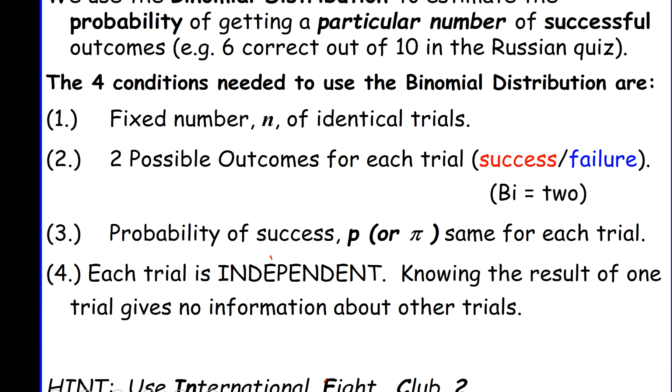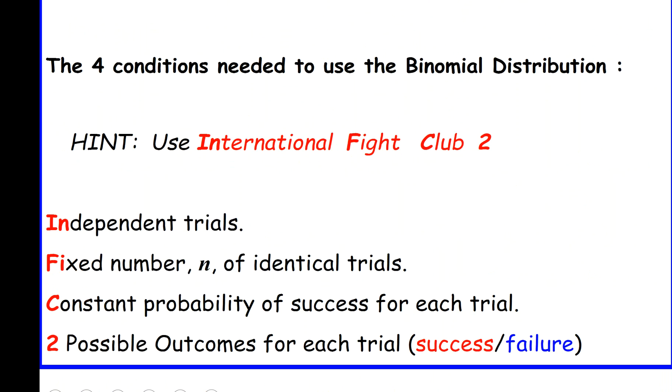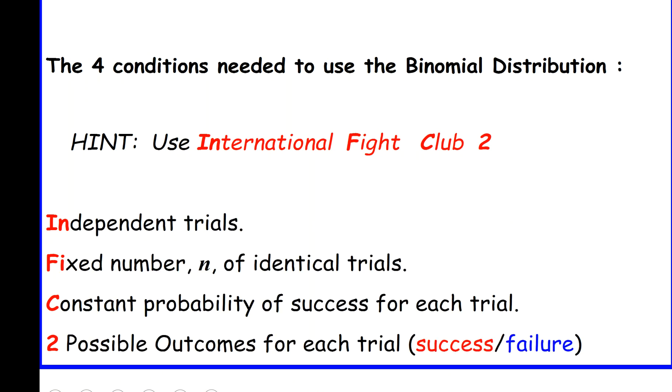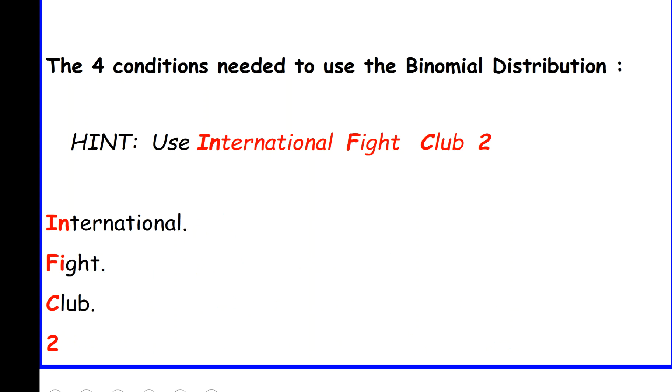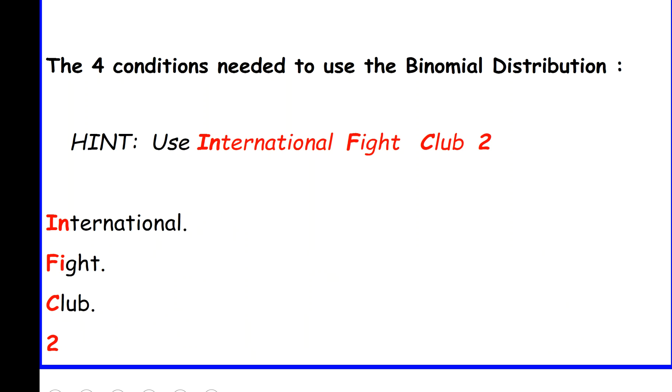A way you can remember that is International Fight Club 2. The "in" in international stands for independent trials. The "fi" in fight is to remember fixed number of trials. The "c" in club reminds us of constant probability of success for each trial. And the two is for the two possible outcomes for each trial.